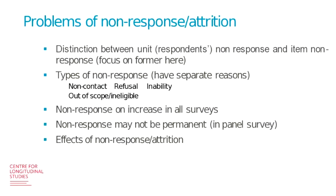At this stage, we need to distinguish between two types of non-response. First, we have unit non-response, where respondents have been selected to participate in the study but do not participate — we have completely missing records for these individuals. In contrast, item non-response is the case where respondents have participated in the survey but did not answer all questions, so we have gaps in the information they provided. In this presentation, I'm only focusing on unit non-response, where a respondent has dropped out from a particular wave and therefore we have a completely missing record for that respondent.